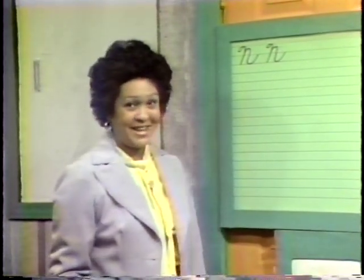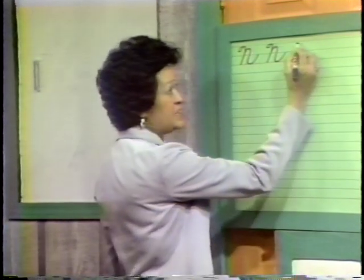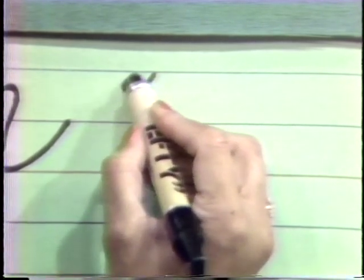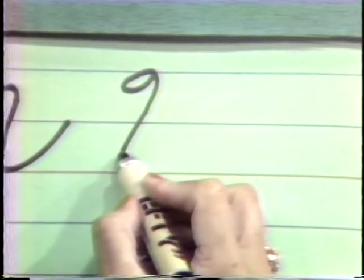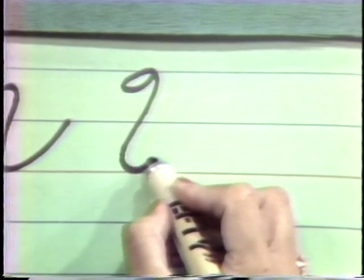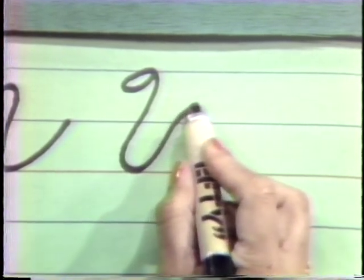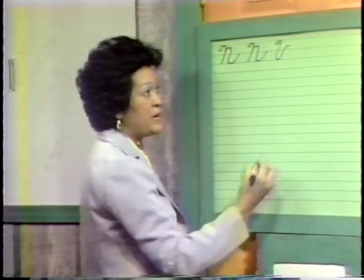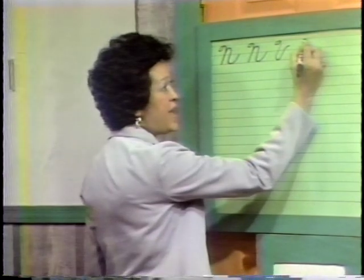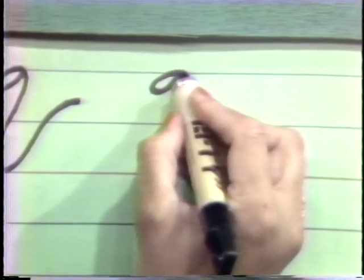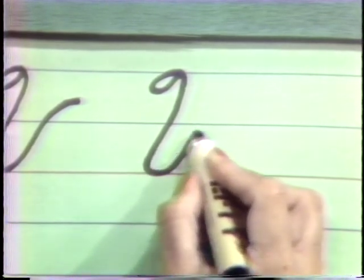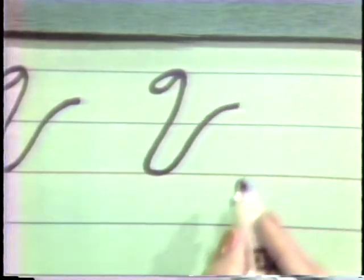The next letter that we will form will be the letter V. Are you ready? V also has a slanted vertical loop. Start at your headline with your slanted vertical loop, come all the way down to your baseline and you're going up, stopping halfway between the midline and the headline. Start at your headline with a slanted vertical loop, come all the way down to your baseline and you're going up and swing out. The letter V.